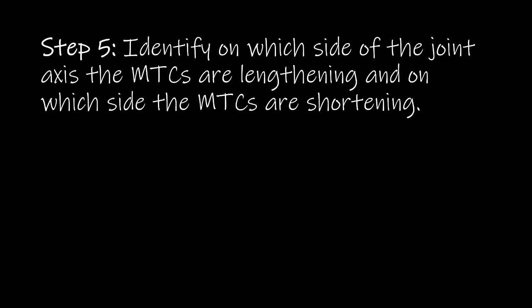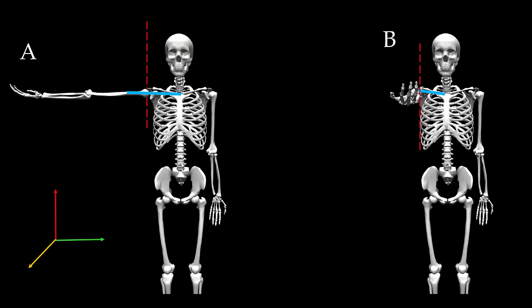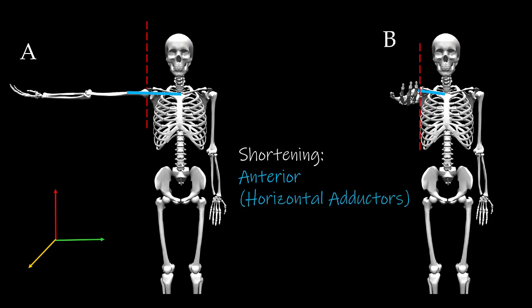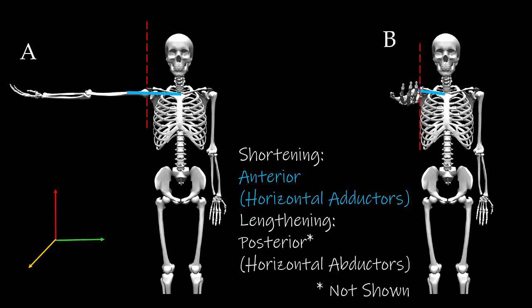Step 5: we identify on which side of the joint axis the MTCs are lengthening, and on which side the MTCs are shortening. As you can see here in blue, the MTCs anterior to the axis of rotation are shortening as we go from A to B. So our shortening MTCs are on the anterior side of the joint — those are going to be our horizontal ADductors, or our horizontal flexors. The muscles that will be lengthening are on the posterior aspect and are our horizontal ABductors, or our horizontal extensors, which are not shown.